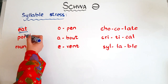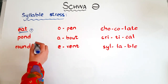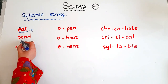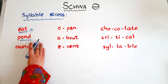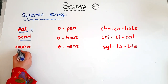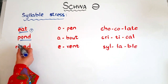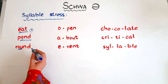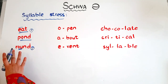So in the word 'eat,' we have only one syllable and it is the stressed syllable. If we have only one syllable, it must be the stressed syllable. Another example is 'pond' — again, we have a single vowel, so this is a single syllable word and the syllable is stressed. Now we have a diphthong: 'ow' — 'round.' Again, because this is a vowel sound and we do not have any other vowel sound in this word, it's a single syllable word, and that means it is the only stressed syllable.